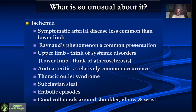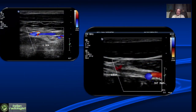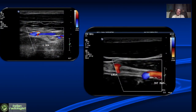In the upper limb, we need to think of systemic disorders, collagen disorders. We need to think of Takayasu arteritis, thoracic outlet syndrome, subclavian steal, and embolisms, which are more common in upper limb as compared to lower limb. And in the upper limb, very often patients have very good collaterals and therefore symptoms are very often less.